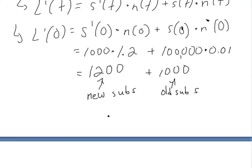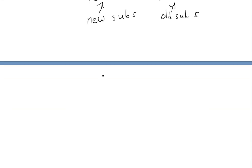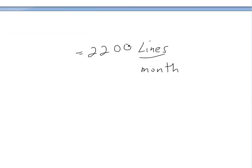And then the total is 2200. So this is the total number of lines, lines per month at the start of January. Then we could use this as an estimate that for January, we will need 2200 lines. So this is what the company would need, their estimate for it.